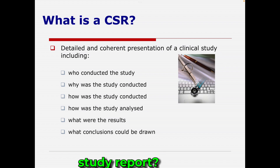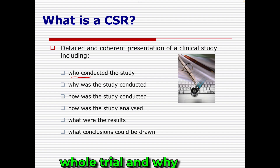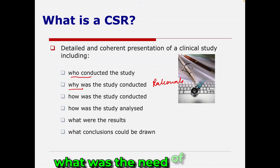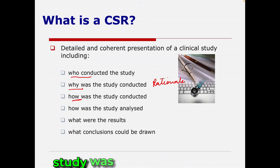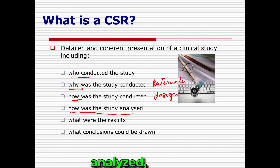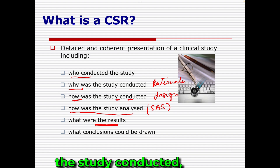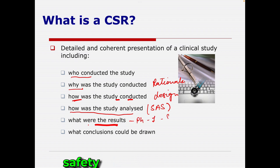So what is a clinical study report? It is the story of your trial. You can find who conducted the study, basically who the sponsor is, why the study was conducted — the rationale, what the need was, how the study was conducted — the design, where it was conducted, how the study results were analyzed, what SAS programming was used, what methods were used, and what the results are.